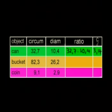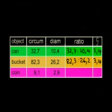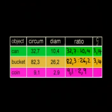For the bucket, the circumference was 82.3 cm and it had a diameter of 26.2 cm. The ratio can be written as 82.3 to 26.2, and C divided by D gives us 3.14 rounded off. For the five-rand coin we get a circumference of 9.1 cm and a diameter of 2.9 cm. The ratio is 9.1 to 2.9, and again C divided by D gives us 3.14 rounded off.